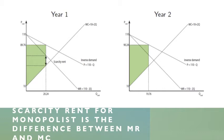That is going to be the optimal solution: equalizing the present value of the difference between marginal revenue and marginal cost between the two years. The scarcity rent for the monopolist is the difference between marginal revenue and marginal cost, as you can see on the graph. This is slightly different from the scarcity rent for the perfectly competitive producer, which is the difference between price and marginal cost. The monopolist cares about marginal revenue instead of prices.